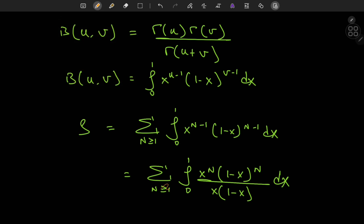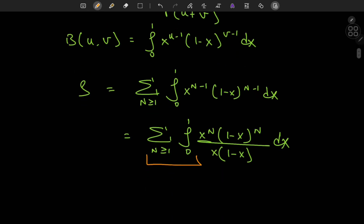Now switching up the order of the integration and the summation operators, I can write this as the integral from 0 to 1 of the sum over n of x to the n times 1 minus x to the n divided by x times 1 minus x dx.